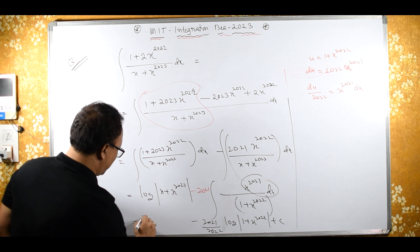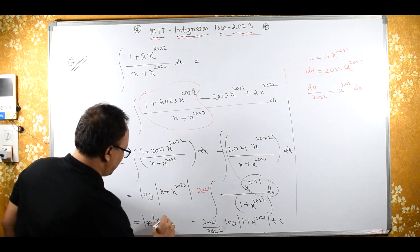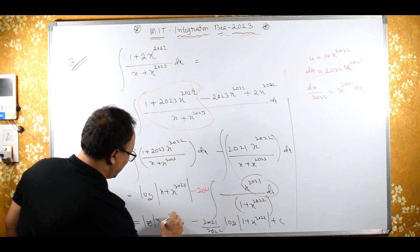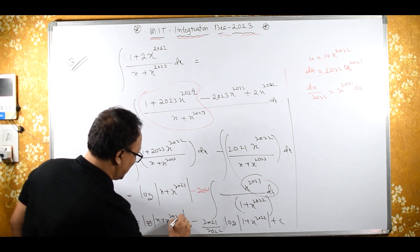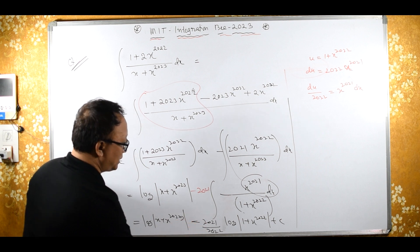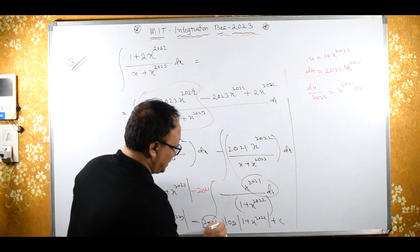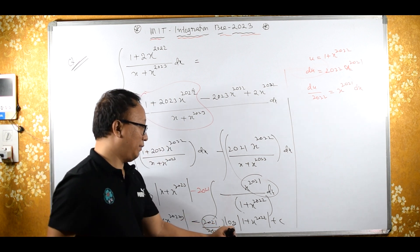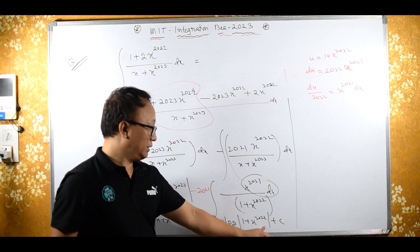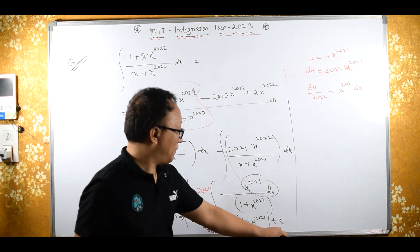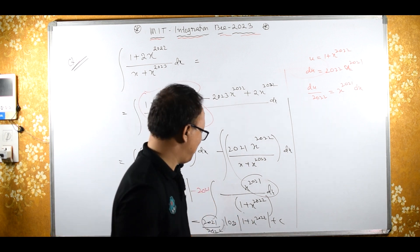So the final answer is: log of x plus x raised to 2023 minus (2021/2022) into log of 1 plus x raised to 2022 plus C.